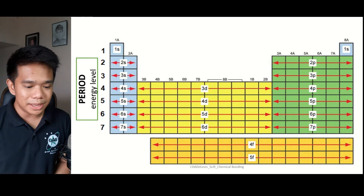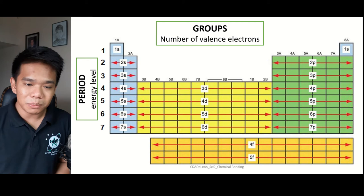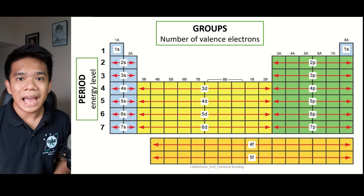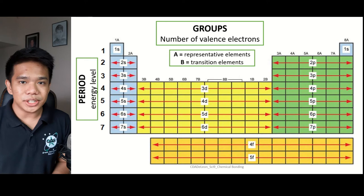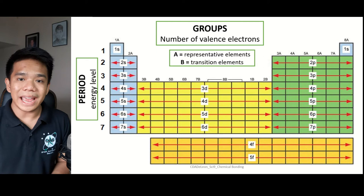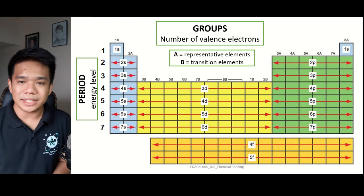Next, we have the groups or family numbers, which represent the columns. Elements found within the same group or family number have the same chemical properties, such as the number of valence electrons. The element groups can be classified as either A or B. Group A elements refers to the representative elements or the main elements, while Group B elements refers to the transition elements or the transition metals.